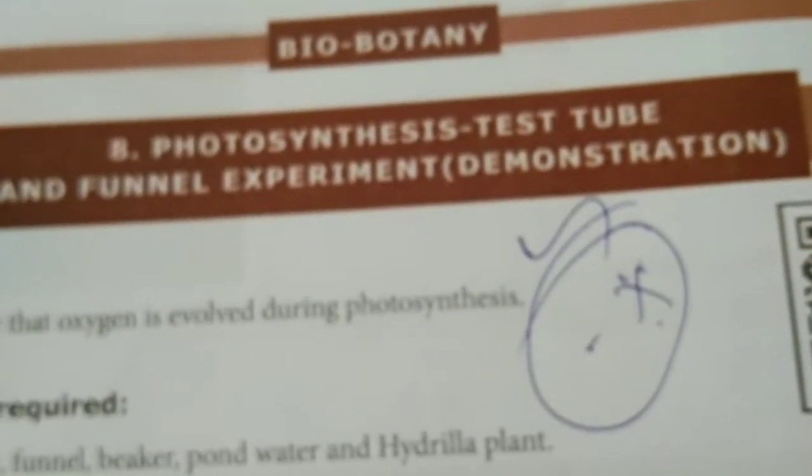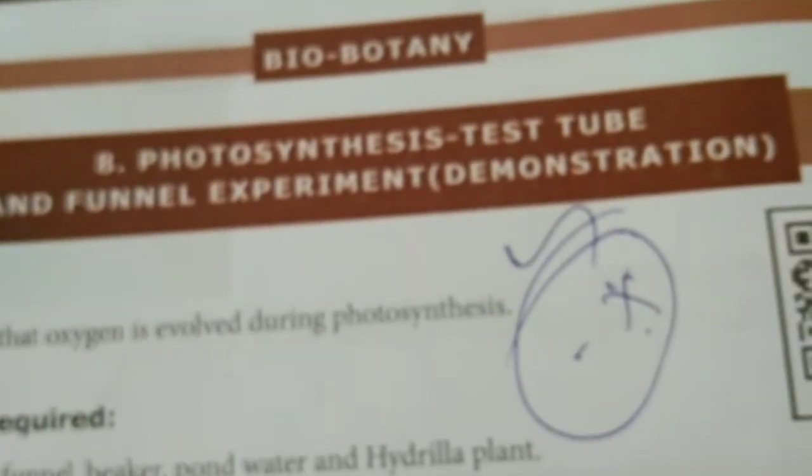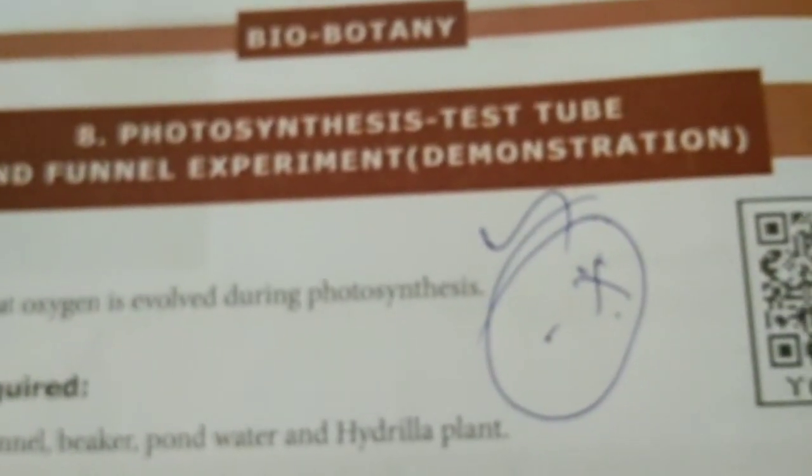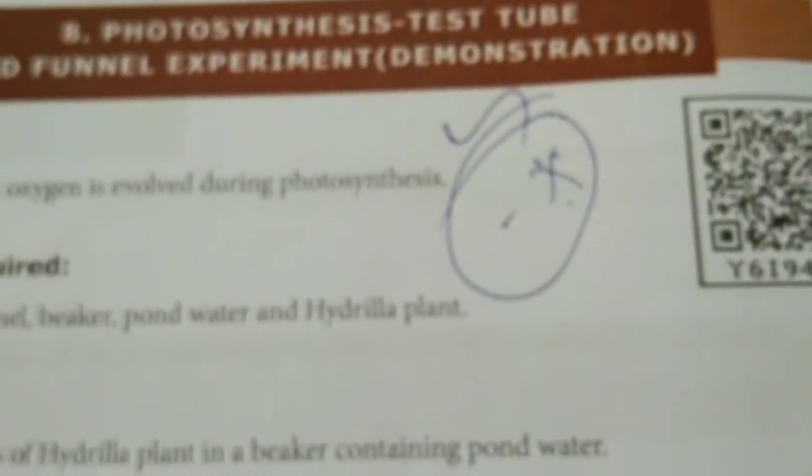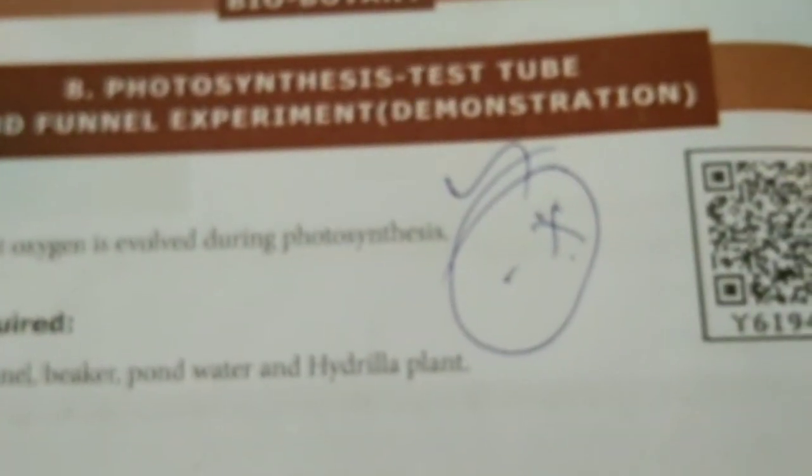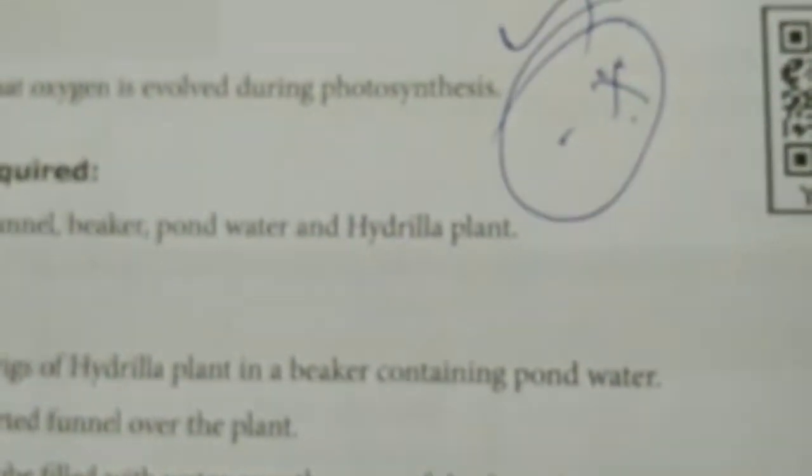Hi dear, now the photosynthesis test tube and funnel experiment. This is a clear picture. What is photosynthesis? Plants prepare their own food with the help of sunlight, water, carbon dioxide, and some other elements. This is going to be photosynthesis.